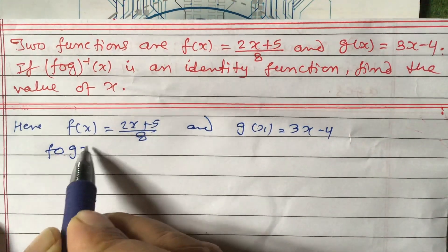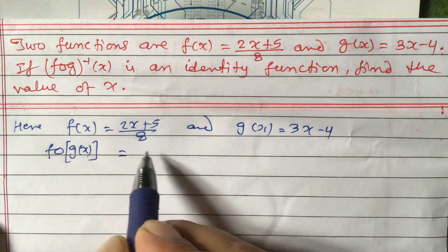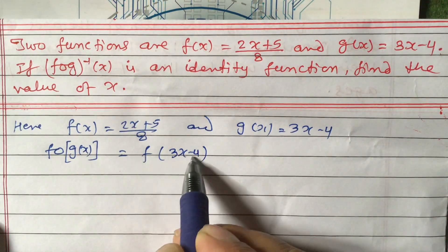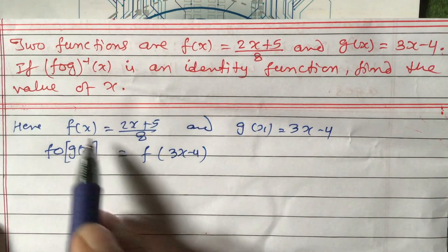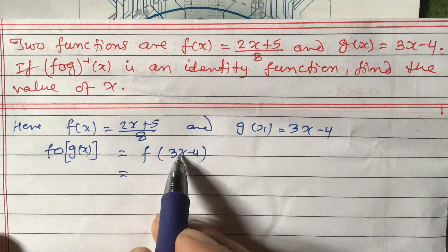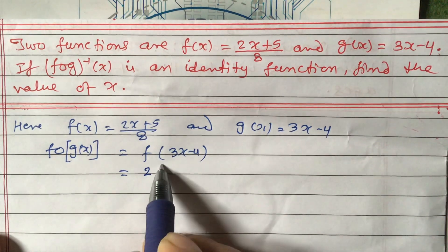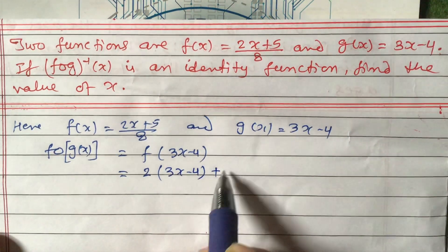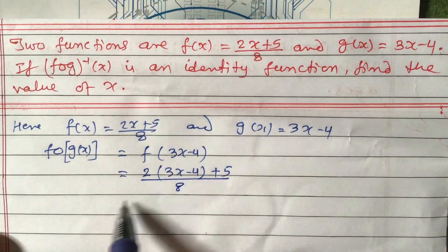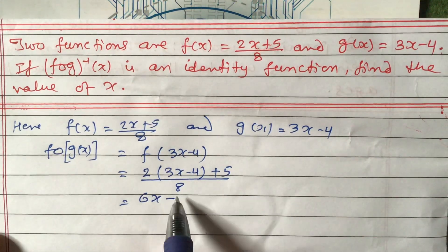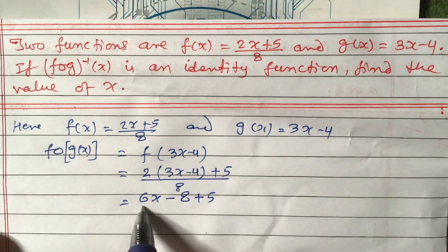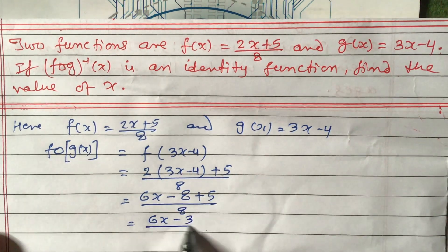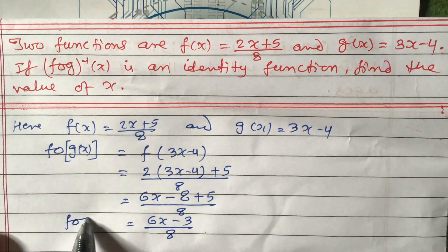So f of g(x): we keep f as it is and put the value of g(x), which is 3x minus 4. Now f(3x - 4) means we replace x with (3x - 4) in f(x). So we get 2(3x - 4) + 5, divided by 8. That gives us 6x minus 8 plus 5, divided by 8, which equals (6x - 3) / 8. So we have found f of g(x).